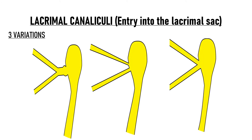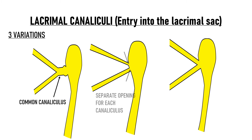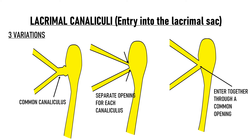There are three ways by which the canaliculi can enter the lacrimal sac. In 94% of the population, the two canaliculi join together to form a common canaliculus which then enters the lacrimal sac. In about 2% of people, there is a separate opening for each canaliculus into the lacrimal sac. While in the remaining 4%, the two canaliculi enter the sac together through a common opening without forming a common canaliculus first.